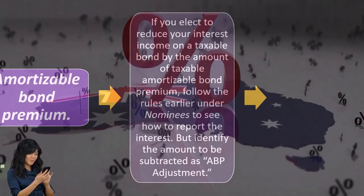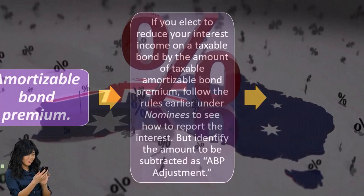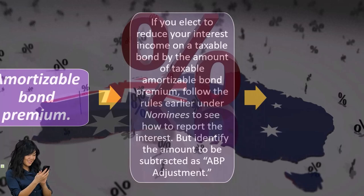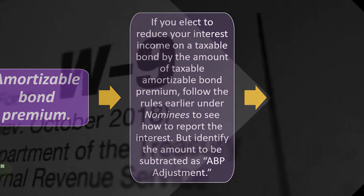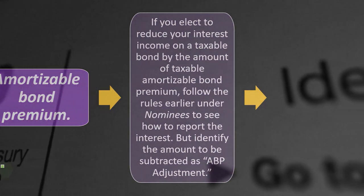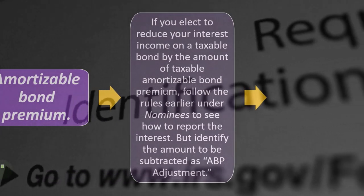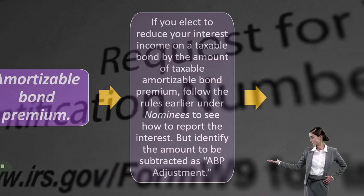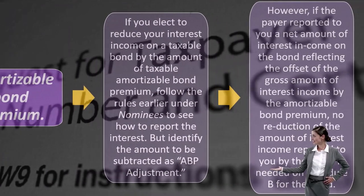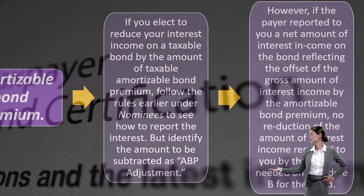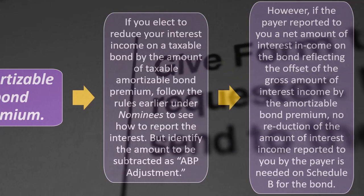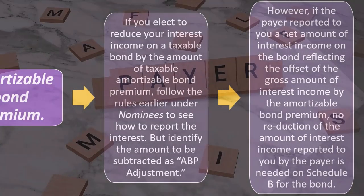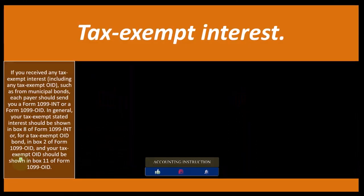Amortizable bond premium: if you elect to reduce your interest income on a taxable bond by the amount of taxable amortizable bond premium, follow the rules under nominees to see how to report the interest. You might end up with a situation where your 1099 isn't reporting the proper amount of interest after taking into account the amortizable bond premium, and you'll have to show your work to not confuse the IRS. Identify the amount to be subtracted as an ABP adjustment. However, if the payer reported a net amount of interest income reflecting the offset of the gross interest by the amortizable bond premium, no reduction is needed on Schedule B.